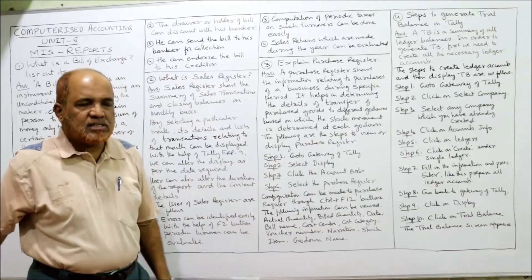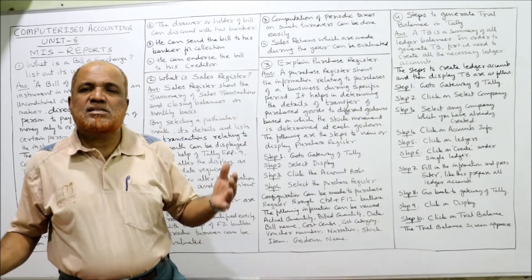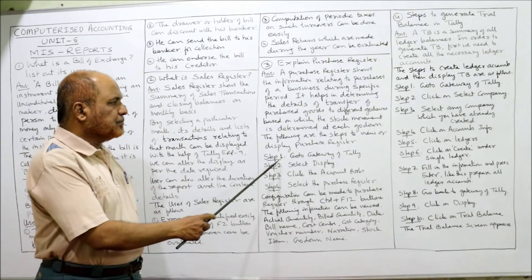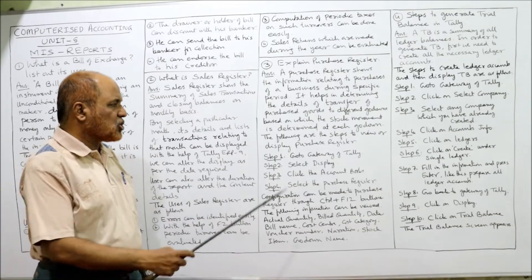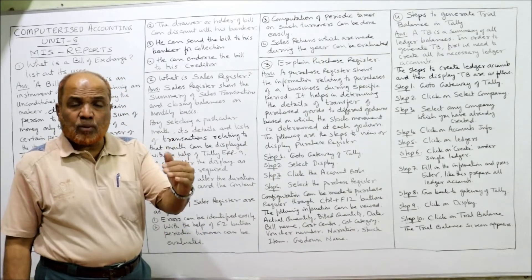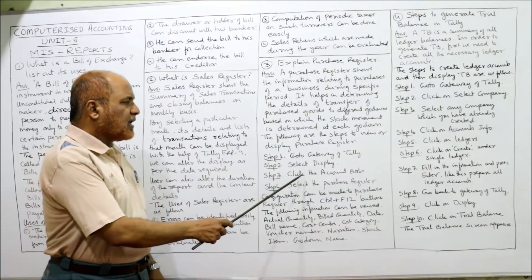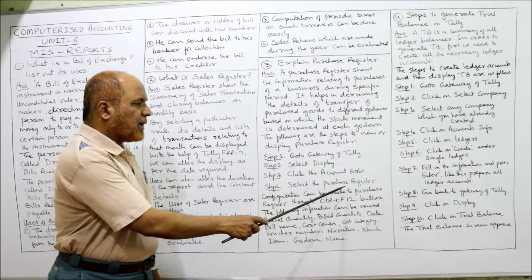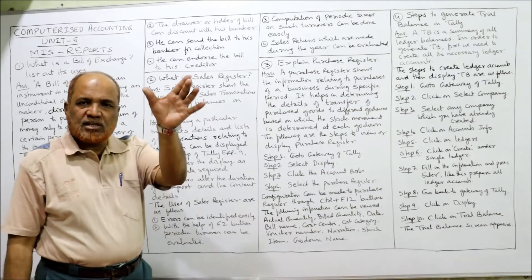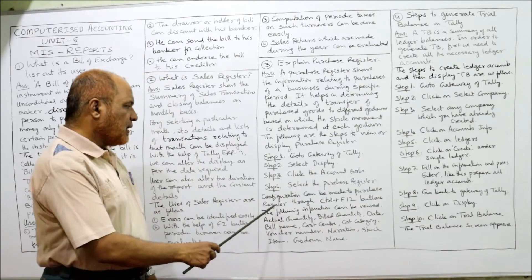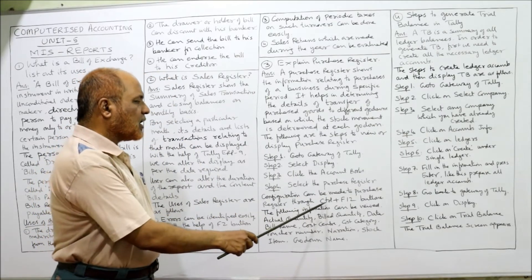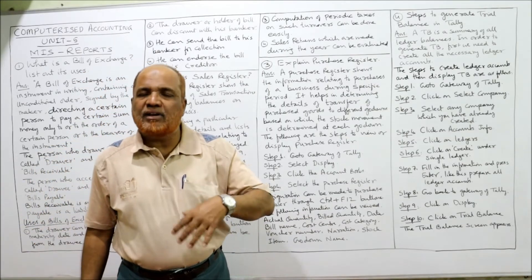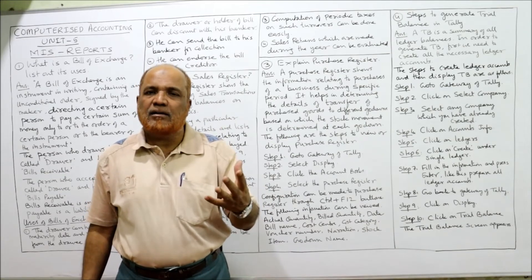The steps to display the purchase register in Tally ERP 9 are: Step 1 — go to Gateway of Tally. Step 2 — select Display. Step 3 — under Display, click on Account Books. Step 4 — select Purchase Register. The purchase register will be displayed on the screen. Configuration can be made through Control + F12.